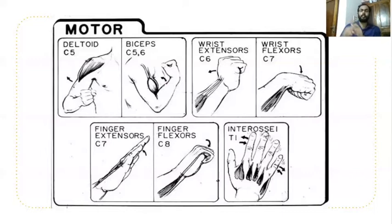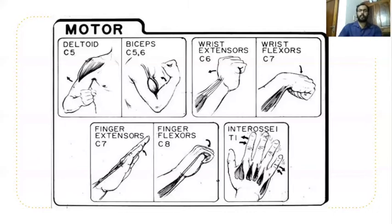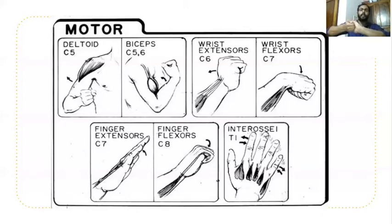For C8, finger flexors are checked. One method is to ask the patient to hold in a grip. Another method is to ask the patient to interlace the fingers and then unfold them — this interlacing technique is a better method for checking C8 finger flexors.